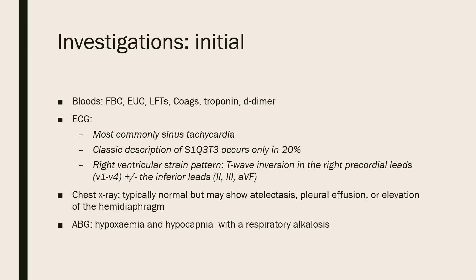ECG findings: most commonly it's sinus tachycardia and nothing else — that's the most common finding. The classic description is S1Q3T3 — deep S waves in lead I, Q waves in lead III, and inverted T waves in lead III — but that only occurs in 20% of patients, so despite being the classic description it's not that common. You might also see a right ventricular strain pattern with T-wave inversion in the right precordial leads and potentially the inferior leads.